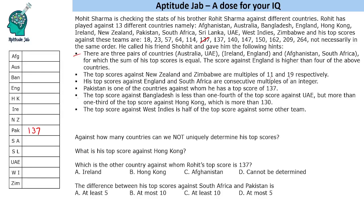If we see the list, we find 209 and 264 — these are the two multiples of 11 present in the list. And if we talk about the multiples of 19, we have 57, 114, 133, 52, 71, 90, 209. Those are the multiples of 19.